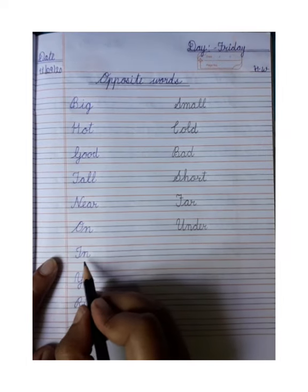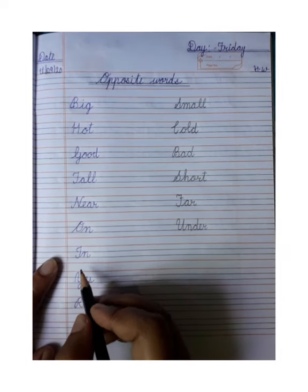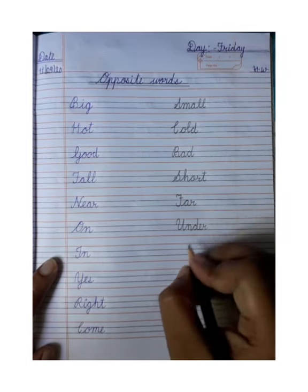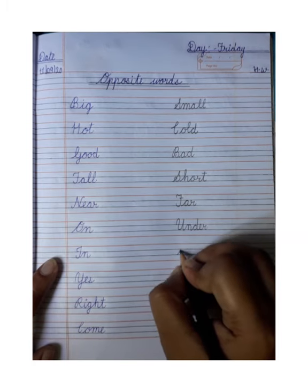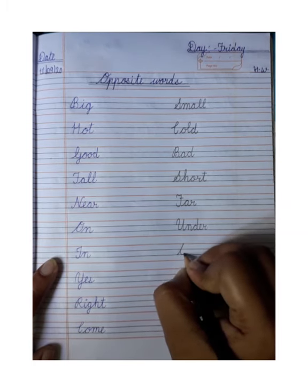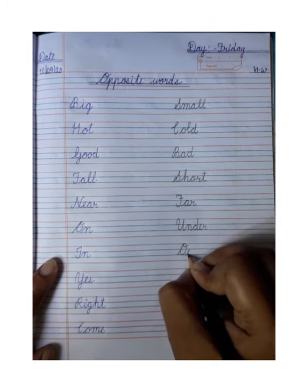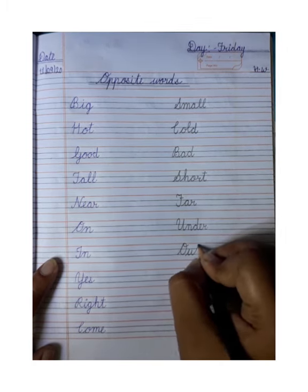Next, in — in ka opposite? Out. In yani andar, out yani bahar. O-U-T, out.